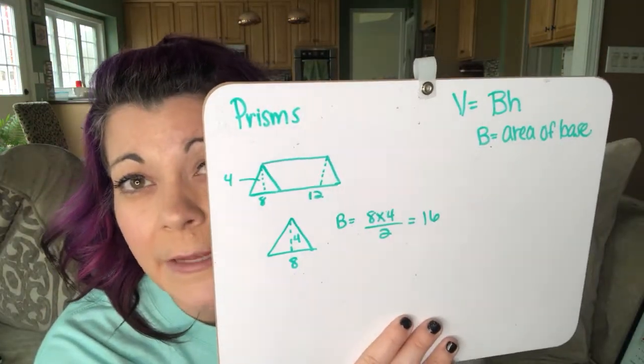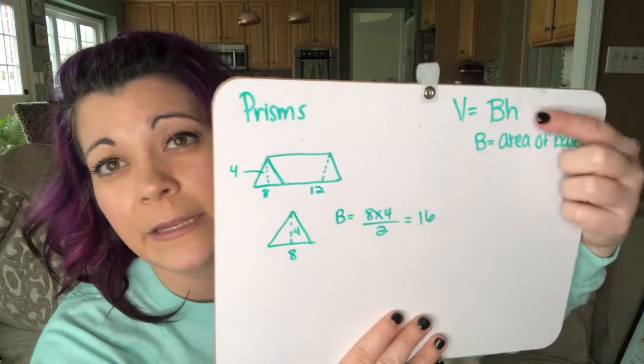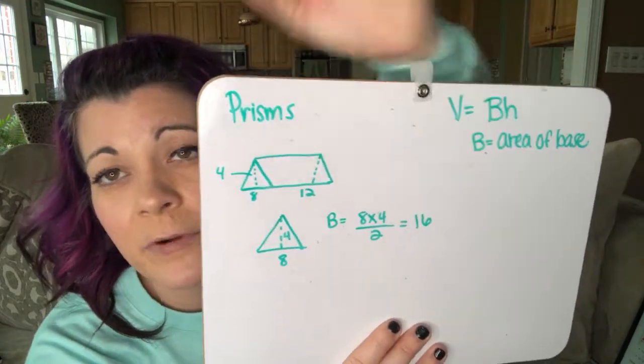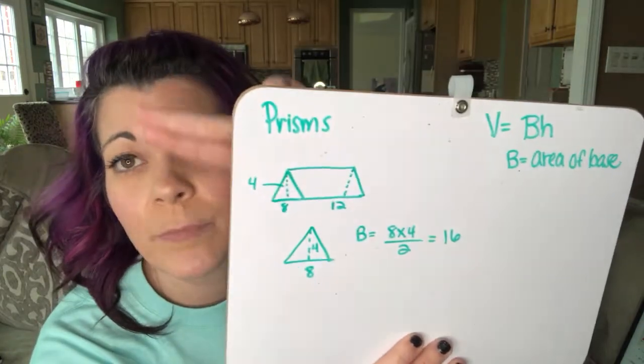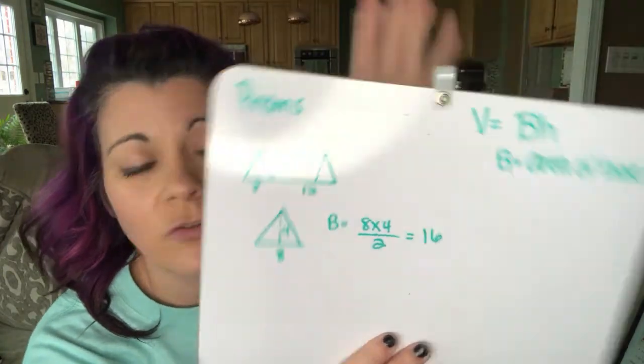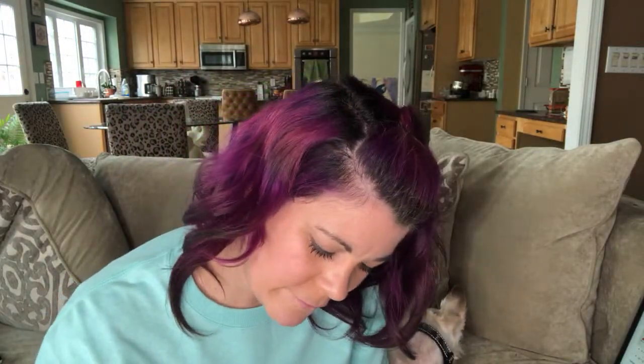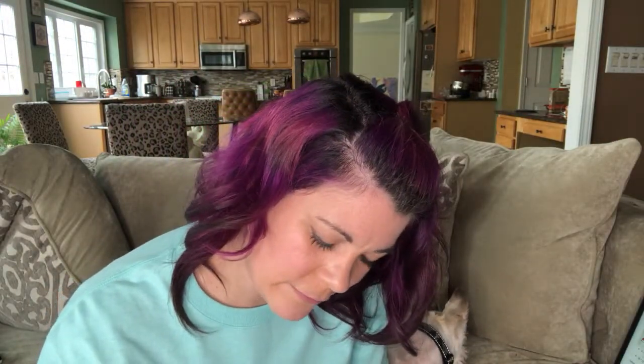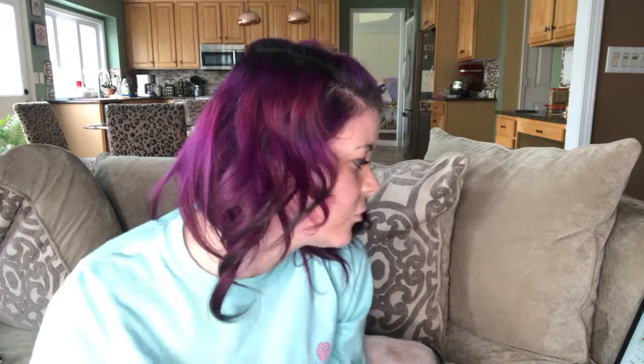And then I need the height. The height connects the two bases, so triangle to triangle would be 12. So volume equals B, which is 16, times H, the height, which is 12. So we have volume equals 16 times 12.